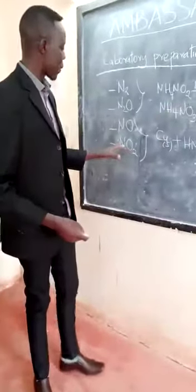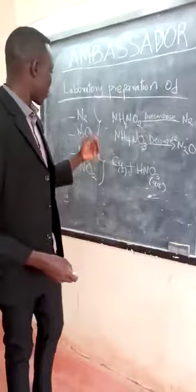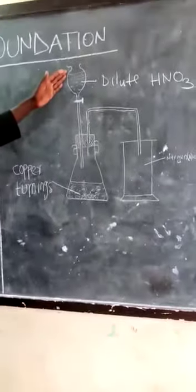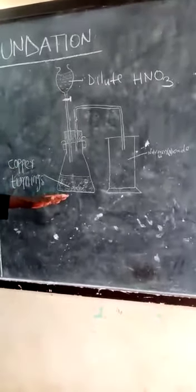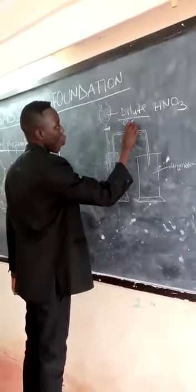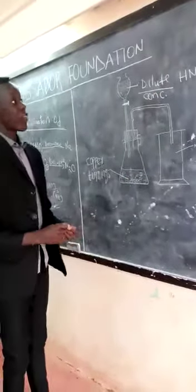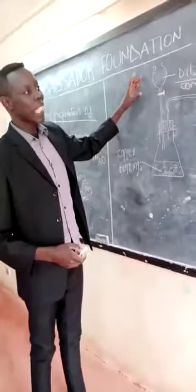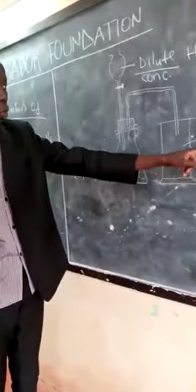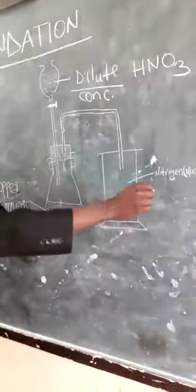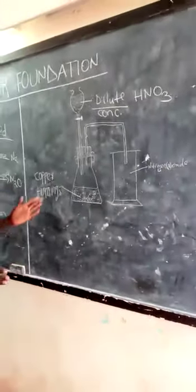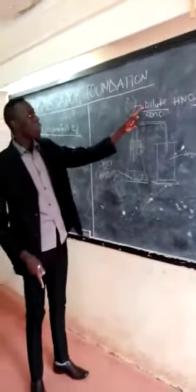There is a diagram here showing how we can prepare nitrogen 2 oxide and nitrogen 4 oxide. We have nitric acid and copper turnings. The difference comes in whether it is dilute or concentrated. If you have seen that it is dilute nitric acid, the gas produced will be nitrogen 2 oxide. But if it is concentrated nitric acid, the gas produced will be nitrogen 4 oxide.